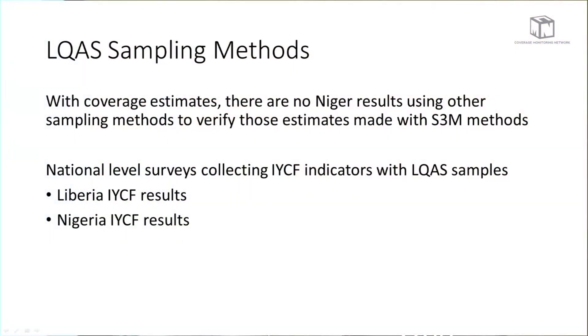So then we come to the coverage estimates. When I've talked to Saul Guerrero, he talks about the data collection on the community level — I'm completely convinced. But surveys are tricky beasts. For validation of the coverage estimate of the Niger survey, we have to have direct estimates to compare that coverage survey. As far as I know, we don't have any other direct estimates to compare them to. But there are estimates of the IYCF indicators, so we can look at IYCF indicators with LQAS samples compared to those with more normal sampling techniques.